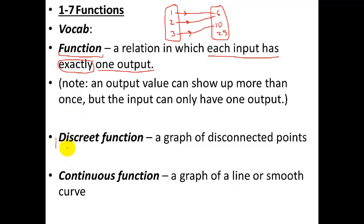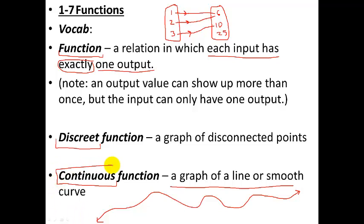Now there's two types of functions. There's a discrete function and a continuous function. The continuous function is continuous, which means it doesn't break or stop. So it's a graph of a line or smooth curve. That means if you were to draw it, you would never pick up your pencil. It's just one continuous smooth curve. There's no sharp corners. Actually, there could be sharp corners, but we're not going to deal with those in Algebra 1. Basically, if you can draw it without picking up your pencil, then it is continuous. That's your go-to rule.